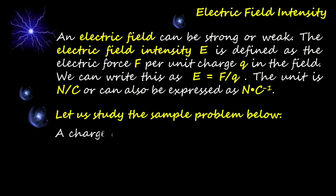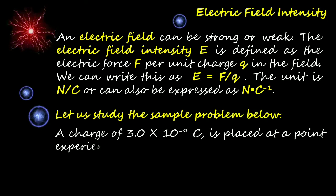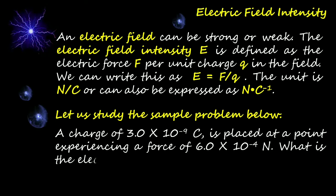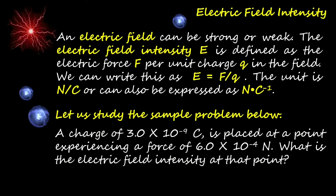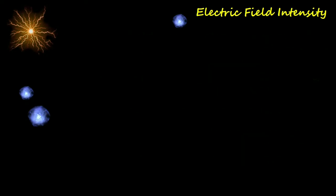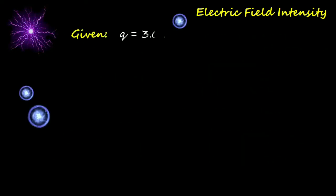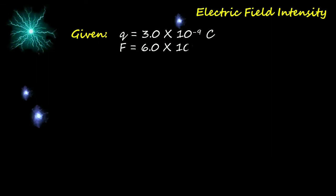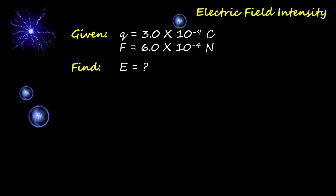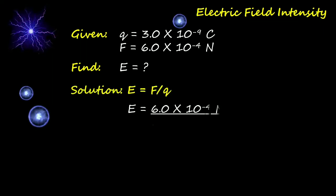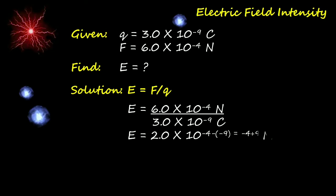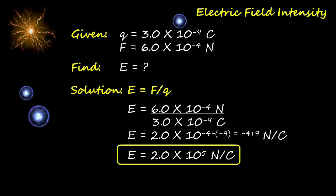A charge of 3.0 × 10⁻⁹ C is placed at a point experiencing a force of 6.0 × 10⁻⁴ N. What is the electric field intensity at that point? Given: charge Q = 3.0 × 10⁻⁹ C, force F = 6.0 × 10⁻⁴ N. Required: electric field intensity E. Solution: substituting into E = F/Q, we get E = 2.0 × 10⁵ N/C.